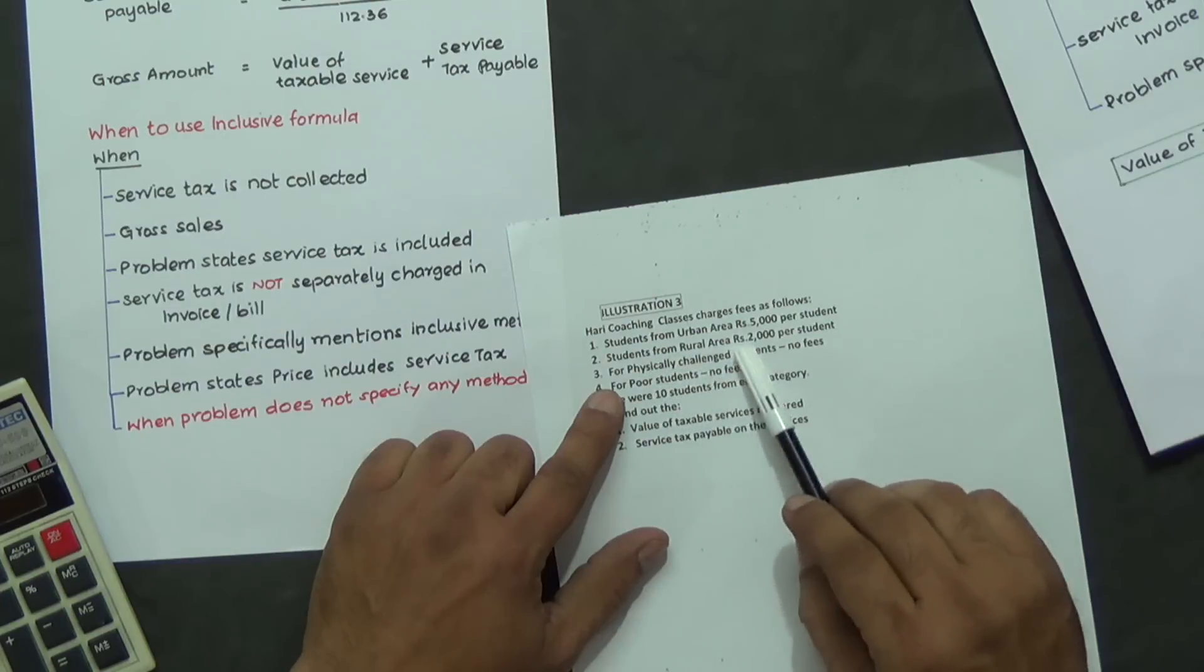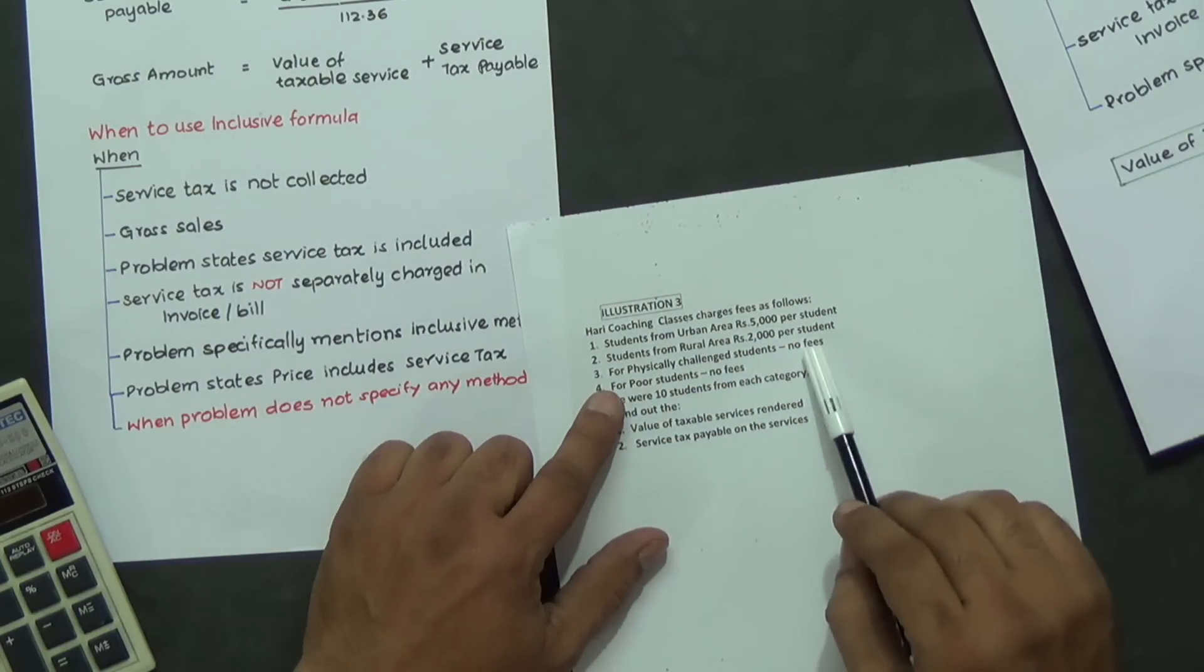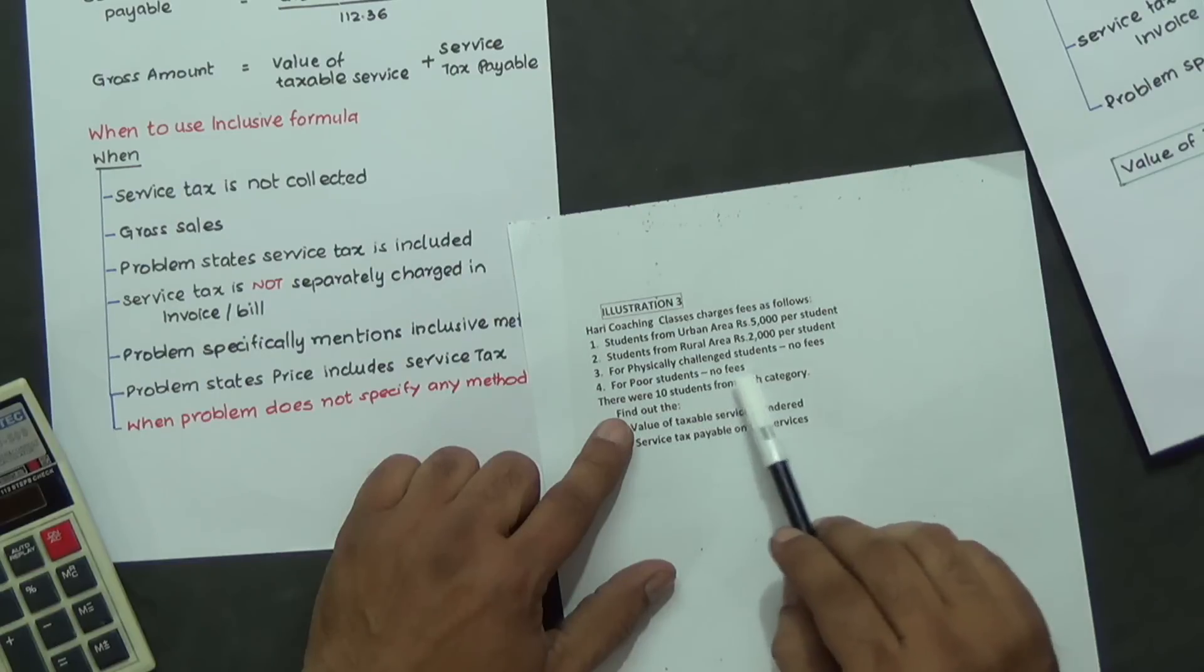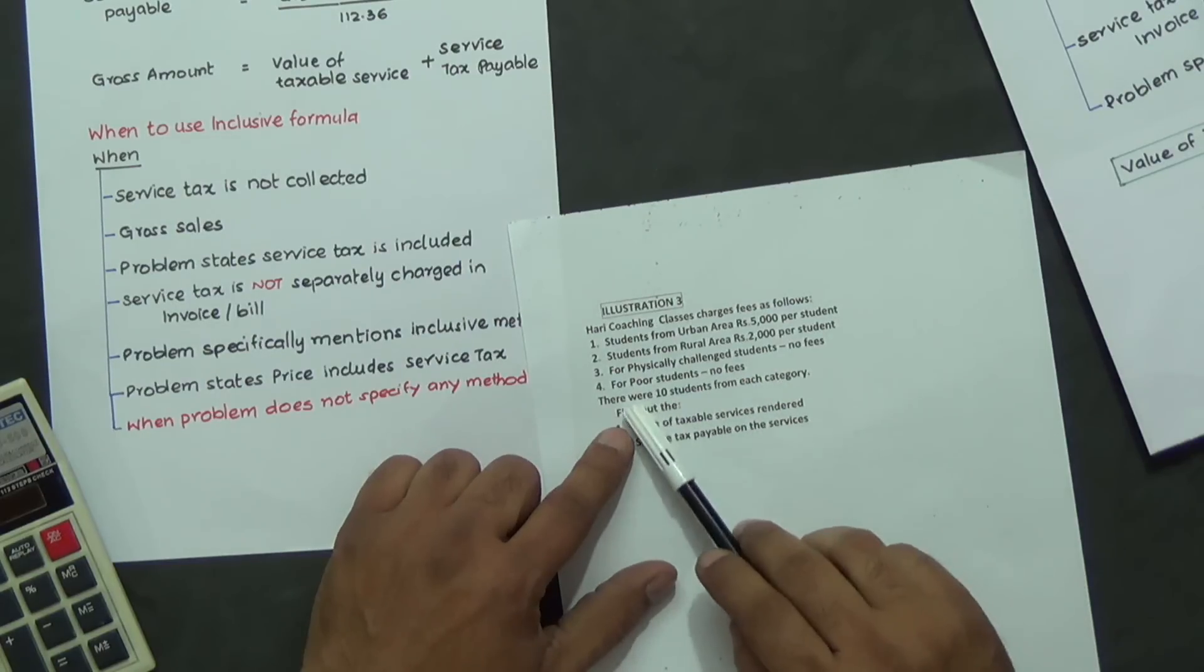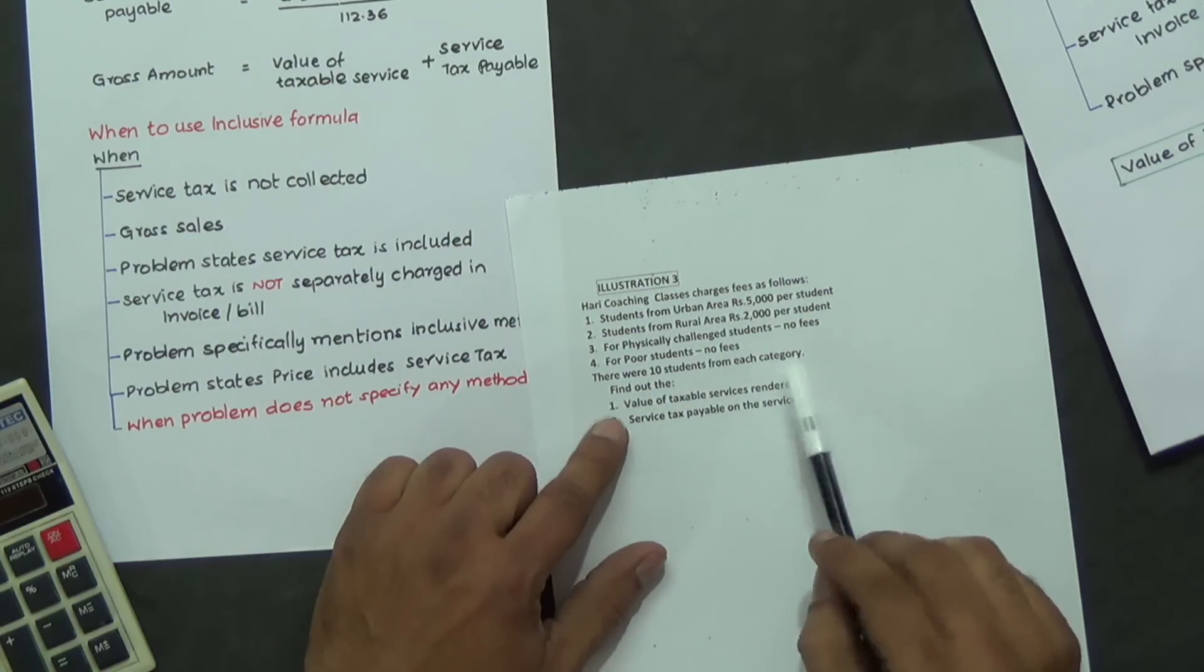Students from urban area, 5,000 per student. Students from rural area, 2,000 per student. For physically challenged students, no fees. For poor students, no fees. There are 10 students from each category.